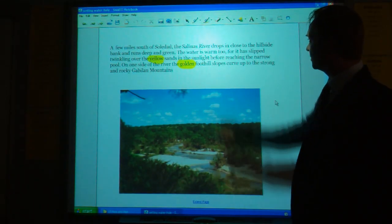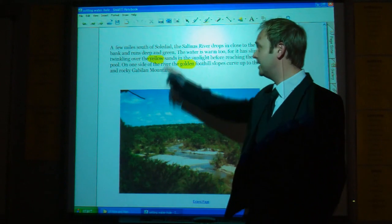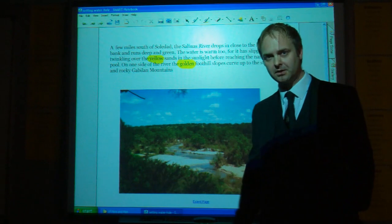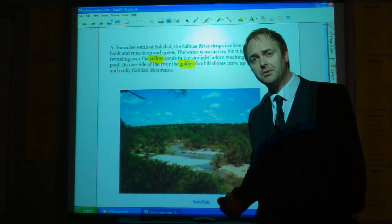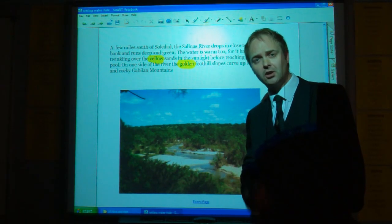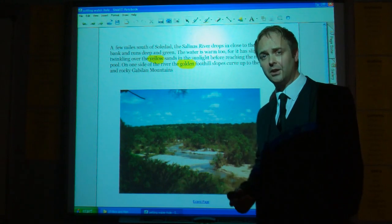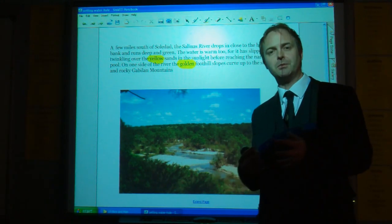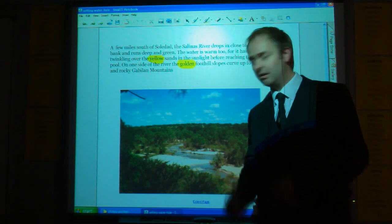If we go on, the water is warm too for it slipped twinkling over the yellow sands, and on one side of the river, the golden foothill slopes. Again, in terms of colour motifs, yellow is really important. Golden, of course, has connotations of value, but yellow itself is a very positive colour, reinforcing this description that seems to be an idyll of the pastoral.